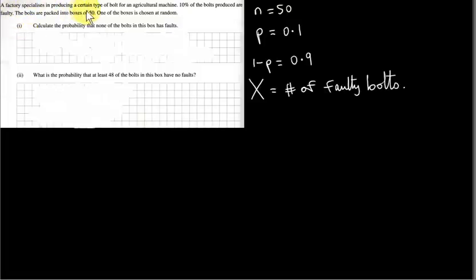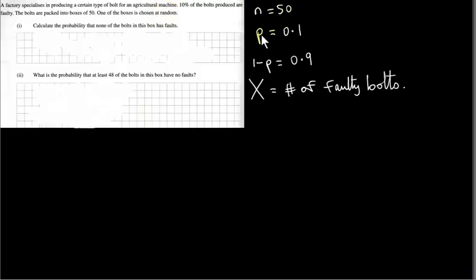A factory specializes in producing a certain type of bolt for an agricultural machine. 10% of the bolts produced are faulty. The bolts are packed into boxes of 50. One of the boxes is chosen at random. We look at a box chosen at random. N is the number of bolts in this box. P is the probability that any bolt in the box is faulty — that's 10% or 0.1.